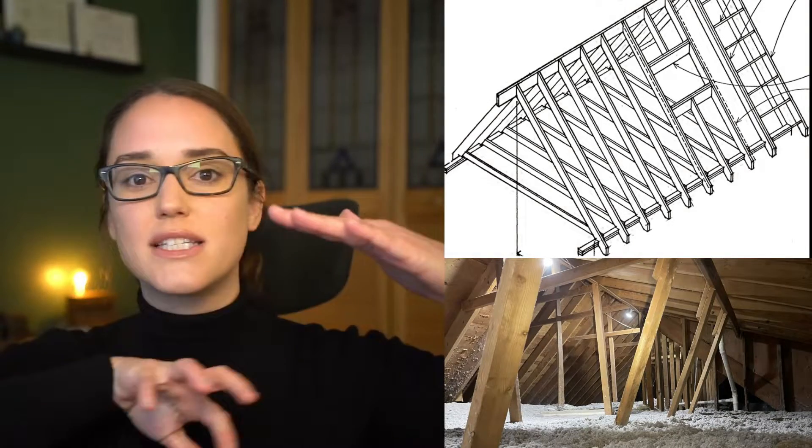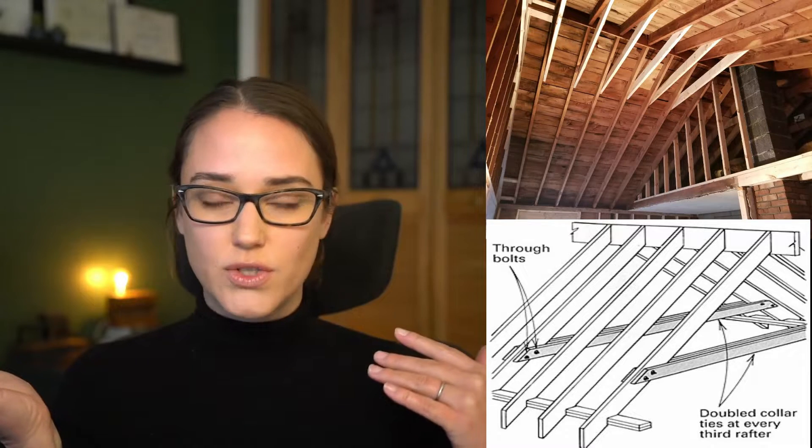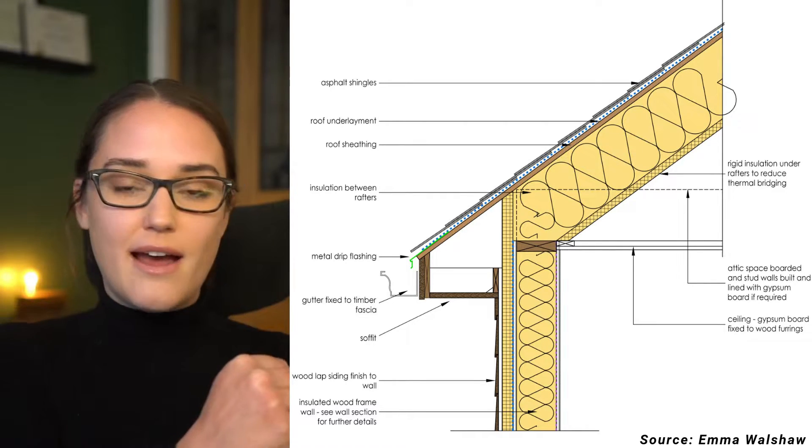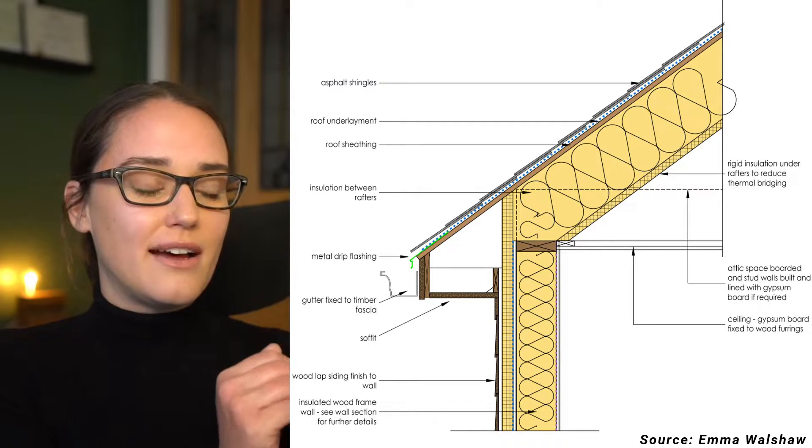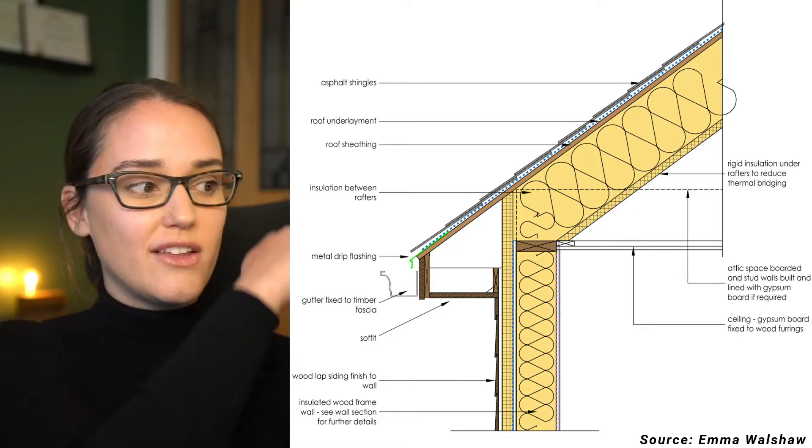I'm focusing on vaulted ceilings — also called cathedral ceilings — because that's where this detail applies. When you have an attic, you have interstitial space to add insulation and do what you need. With a vaulted ceiling, the roof rafters essentially create the ceiling: you have gypsum board on the inside, insulation between the rafters, then sheathing like plywood, and then your roof finish on top.